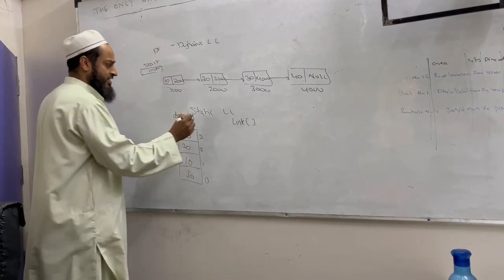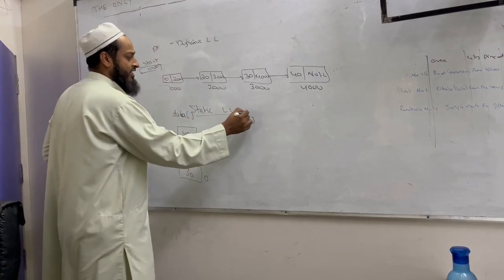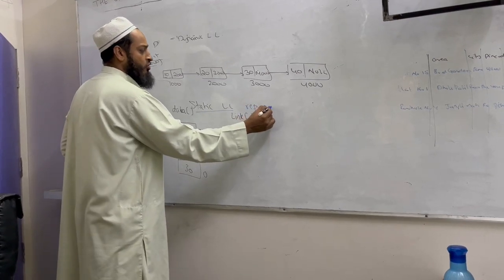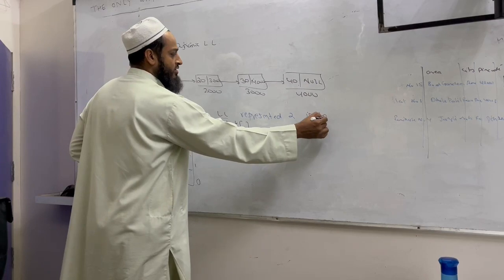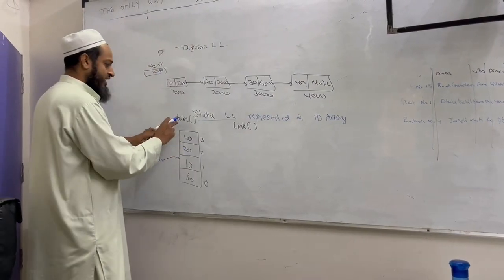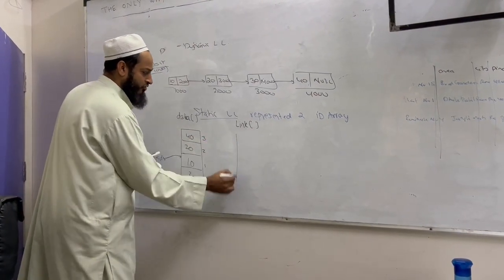So today we will discuss what is static linked list and it is represented using two arrays, two one-dimensional arrays. One array will be for the data and one array will be for the link.